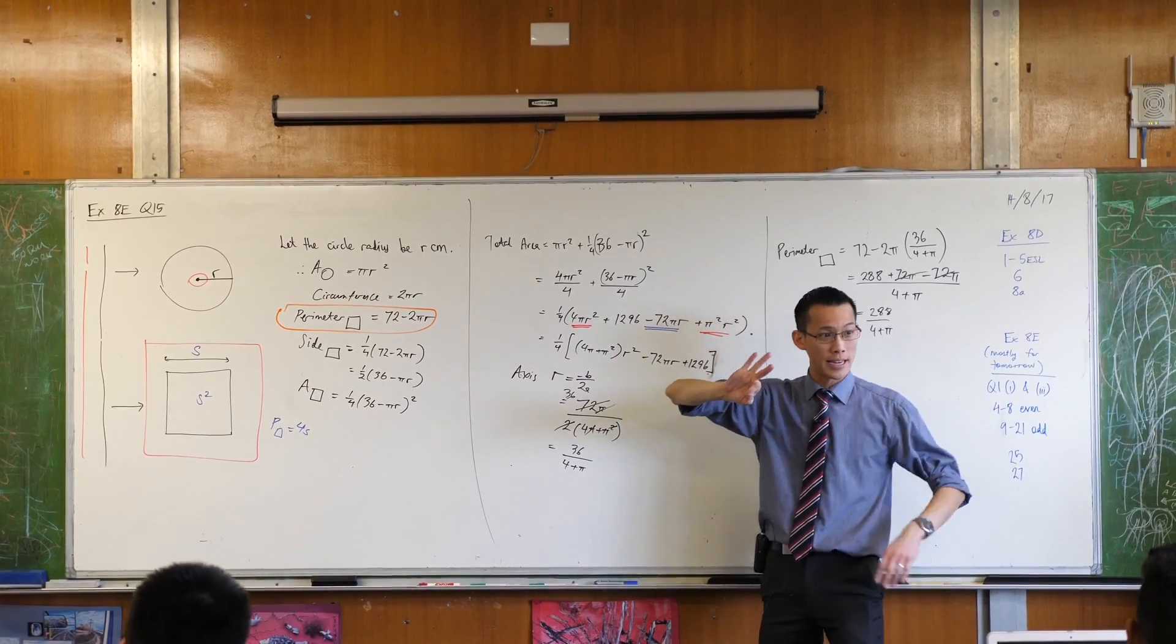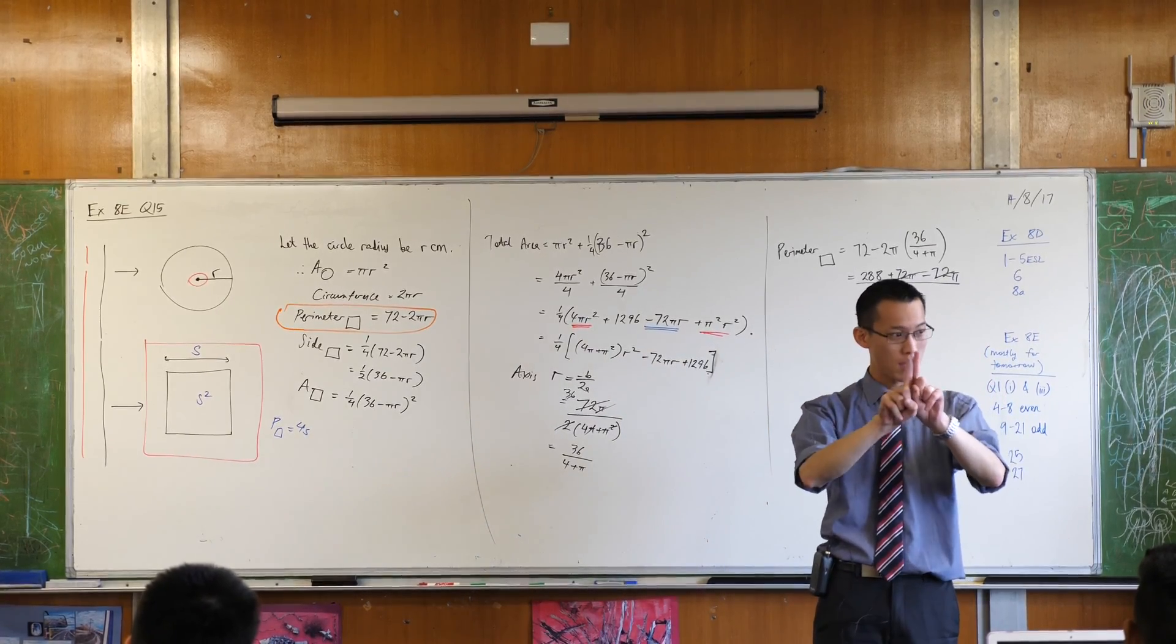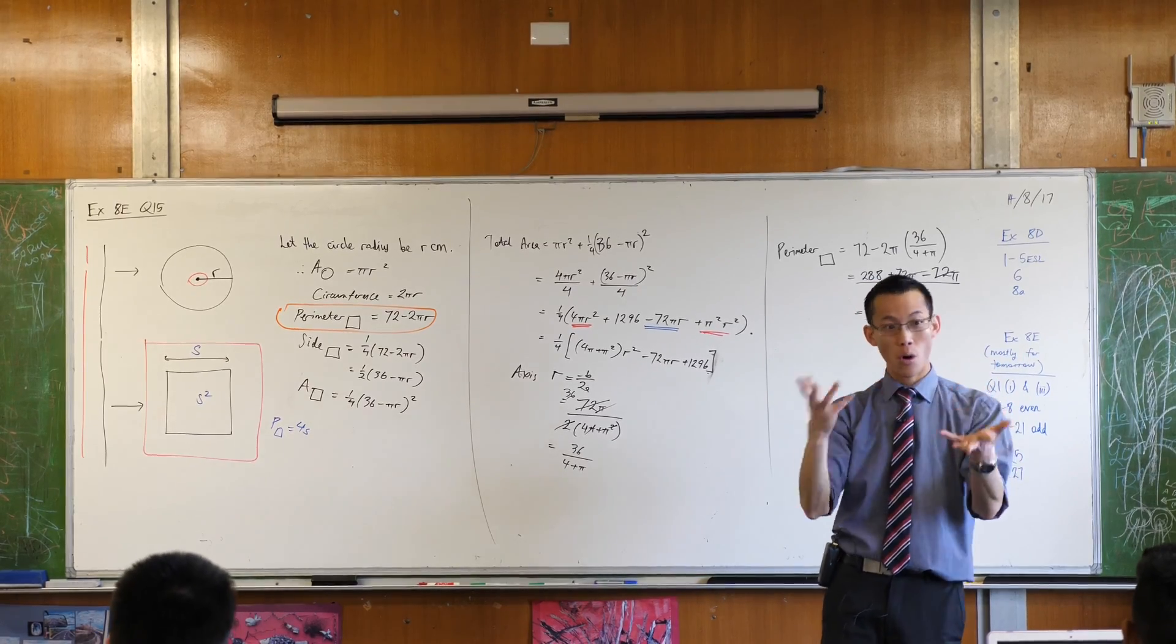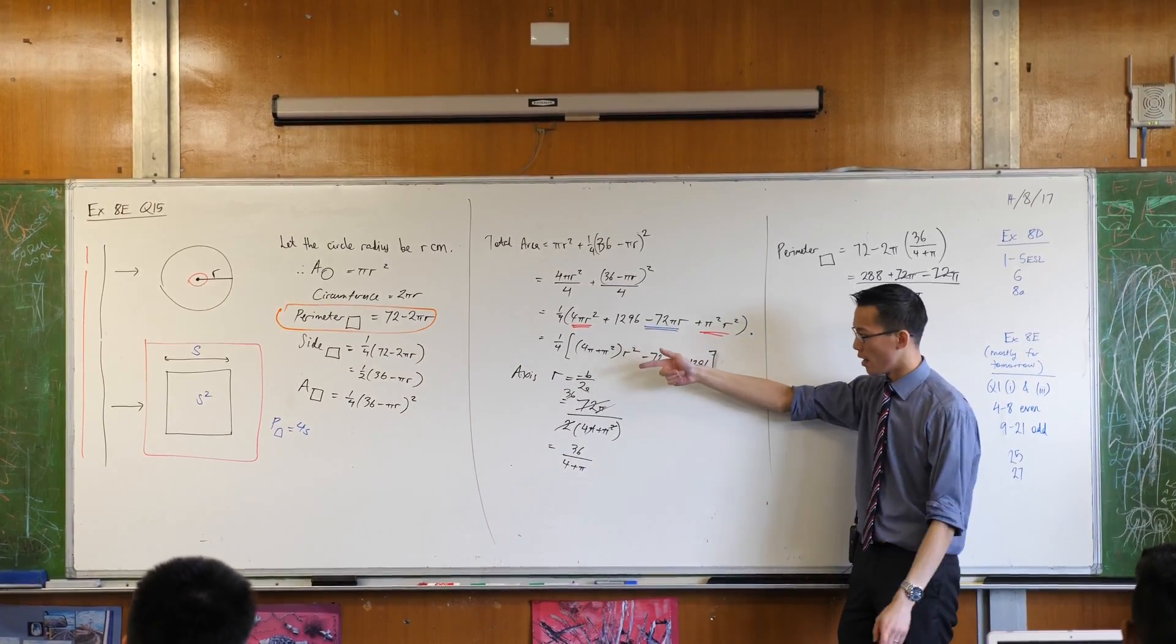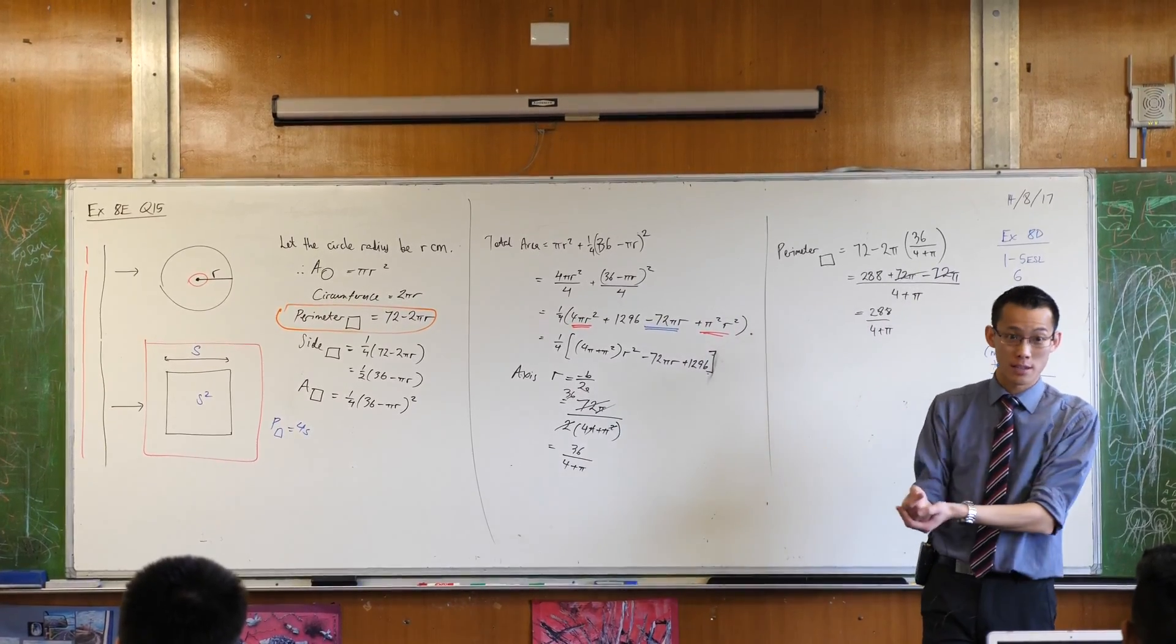You have three techniques for finding a maximum or a minimum. You factorize, that gives you the roots and you come halfway. Or you can complete the square to find the vertex. Or you can go straight to the axis of symmetry, which will tell you the x-coordinate or r-coordinate in this case.